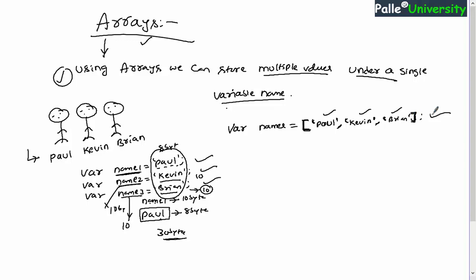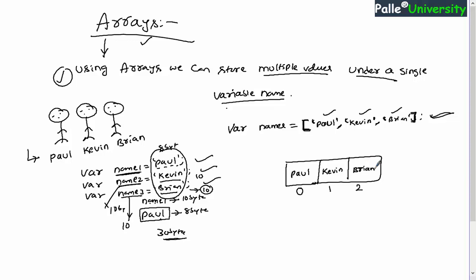Once this code is executed, one block will be created in memory with three cells. The first cell has index number 0, the second is 1, and the third is 2. Paul is stored in cell 0, Kevin in cell 1, and Brian in cell 2. The entire array is given the single name 'names' — so with a single variable name we are able to store multiple values. That is the benefit of arrays.